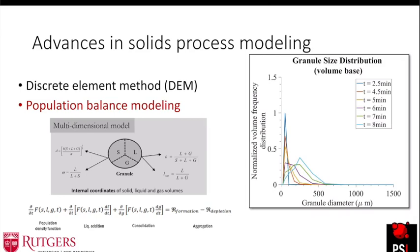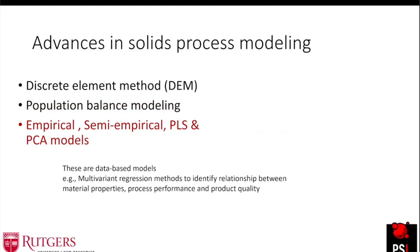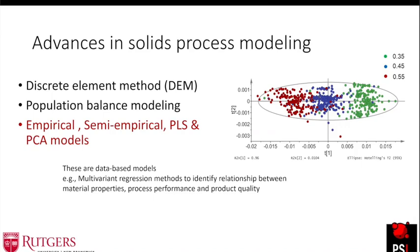Another method widely used in solid process modeling is empirical, semi-empirical, or data-driven methods. The main area where data-driven methods are used is to understand how material properties affect the process. When you have multiple materials in a system, it's very difficult to predict the bulk behavior. People use tools such as PLS modeling to understand the behavior of particles and cluster them into categories — for example, whether they compress faster or not. This information also helps with process design and QBD.